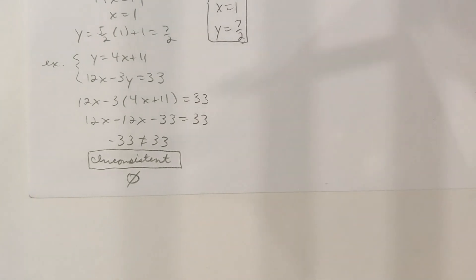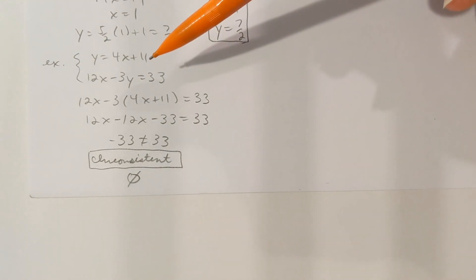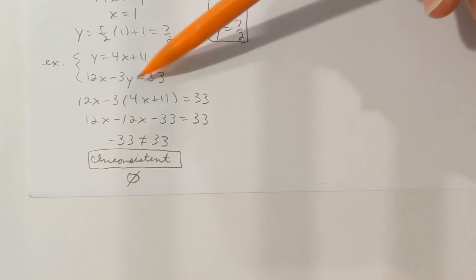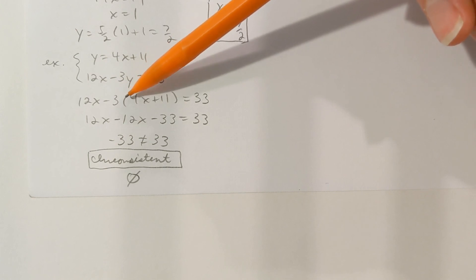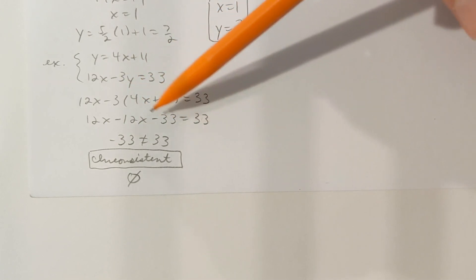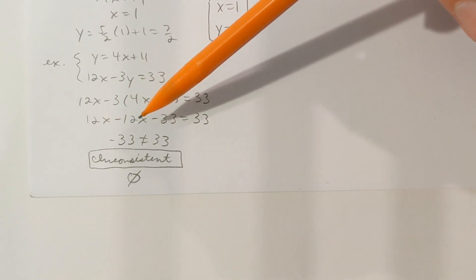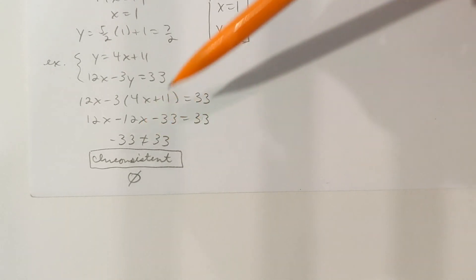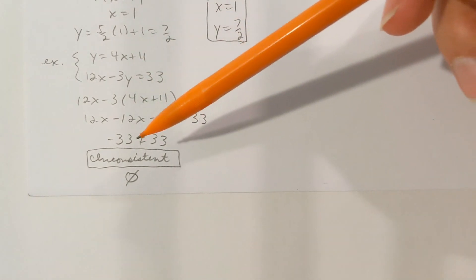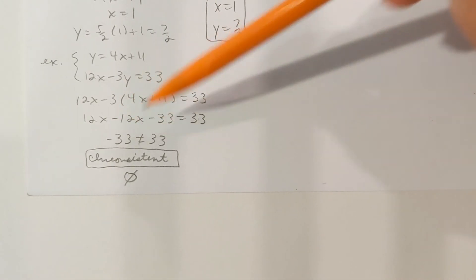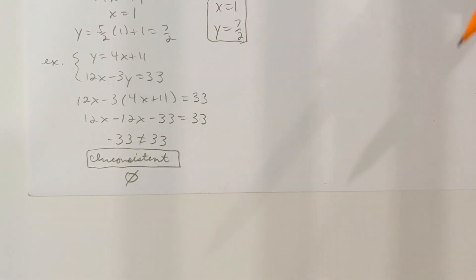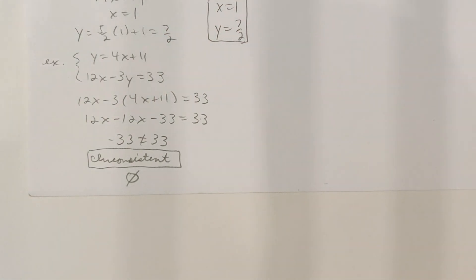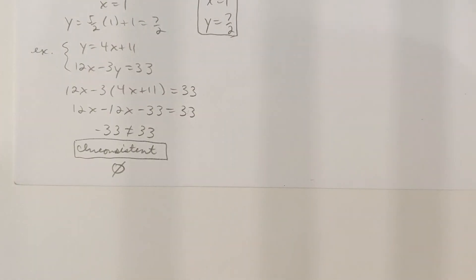Here's another example using the substitution method. The top equation is already solved for y, so plug that into the bottom equation. After distributing −3, you get 12x − 12x − 33 = 33. The x terms cancel, leaving −33 = 33, which is not true. Since x was eliminated and you have a false statement, there are no solutions to this system. This is called an inconsistent system. In general, whenever you get a false statement after the variable is eliminated, it's an inconsistent system.